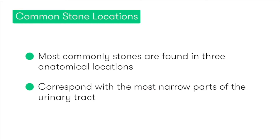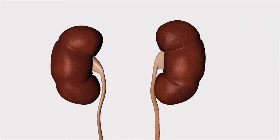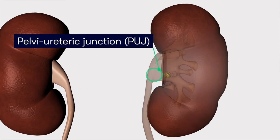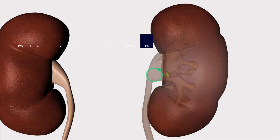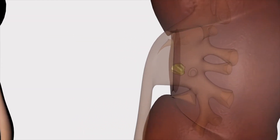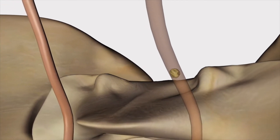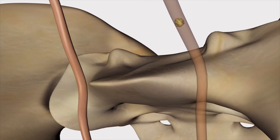Starting superiorly, the first location is the Pelvi-Ureteric Junction, or the PUJ, where the renal pelvis and the ureters meet. Then moving inferiorly, the next common location to find a stone is in the distal ureter at the point at which it narrows as it crosses the pelvic brim.